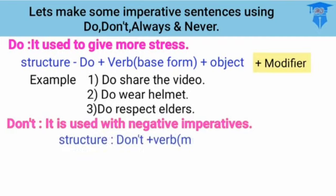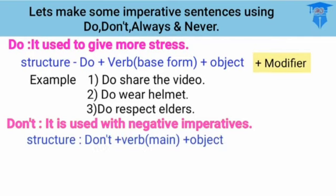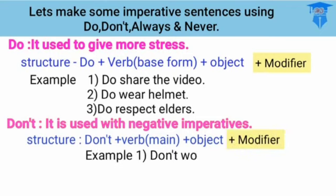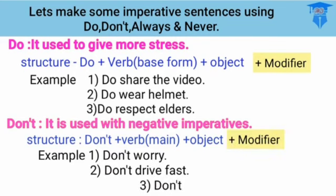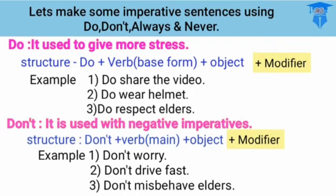When you use 'don't,' it becomes a negative imperative. The formula is: don't + verb + object. For example: 'Don't worry,' 'Don't drive fast,' 'Don't misbehave with elders,' 'Don't be late,' 'Don't cheat,' and others.